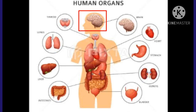Brain. The brain is situated in the cranial cavity and the skull bones protect the brain. The function of the brain is to control the body movements.